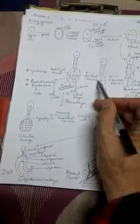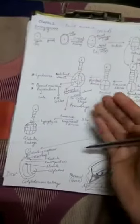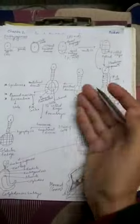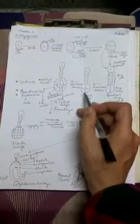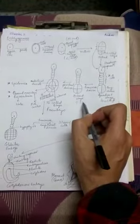Once this four-cell pro-embryo undergoes another division — in the horizontal or transverse plane — it causes formation of eight cells visible on this side and eight below it, making a total of eight cells. This stage is called the octant.